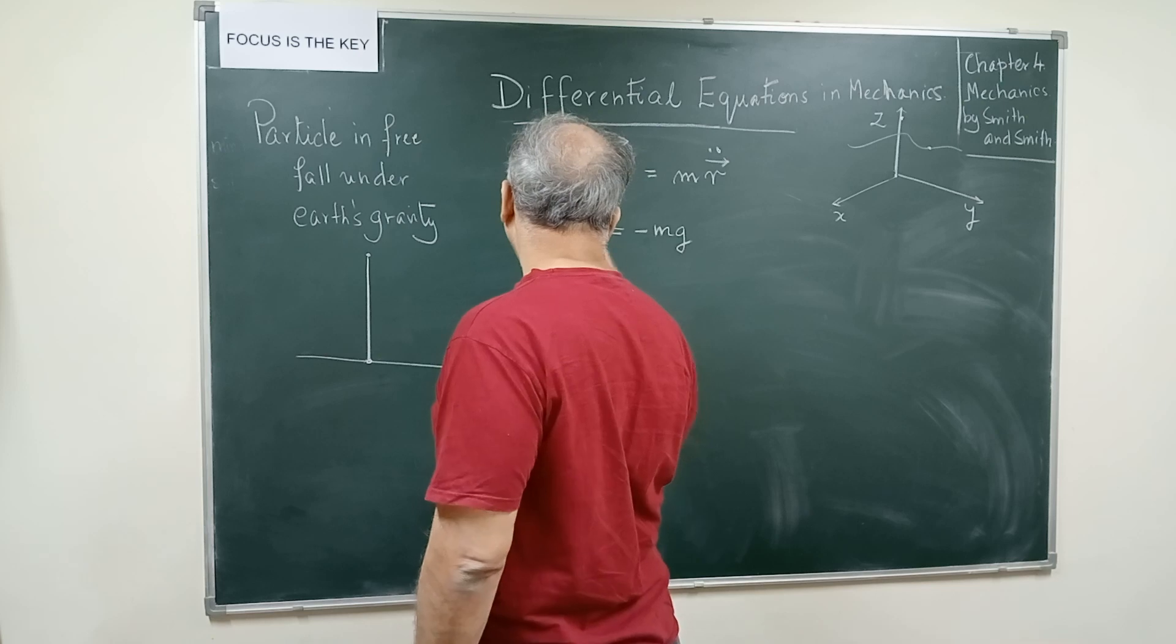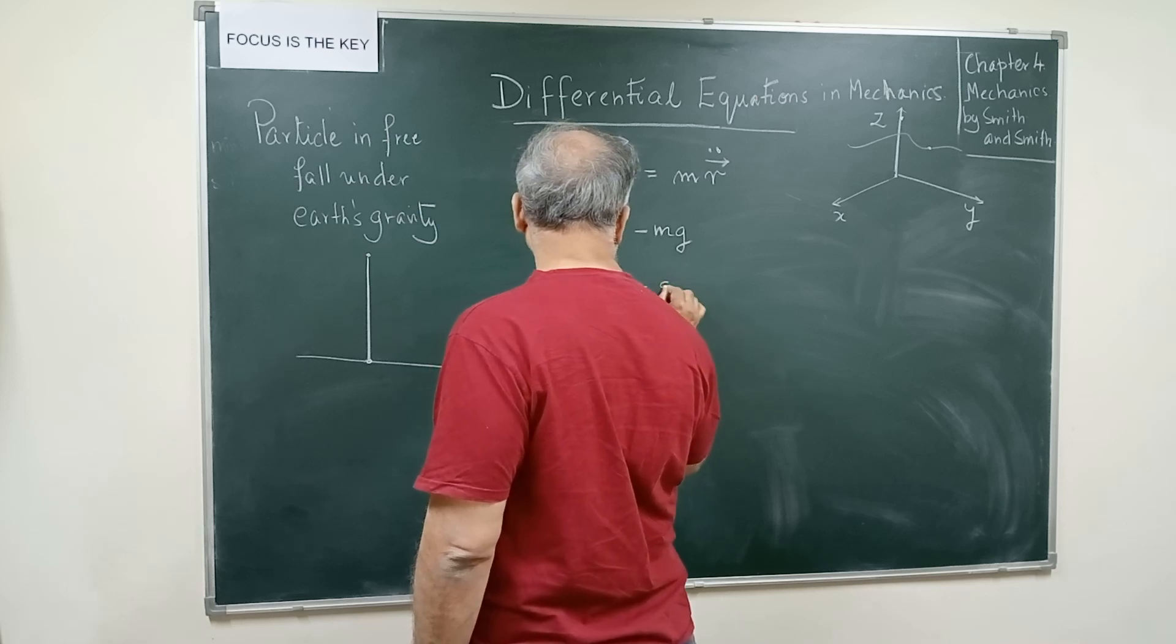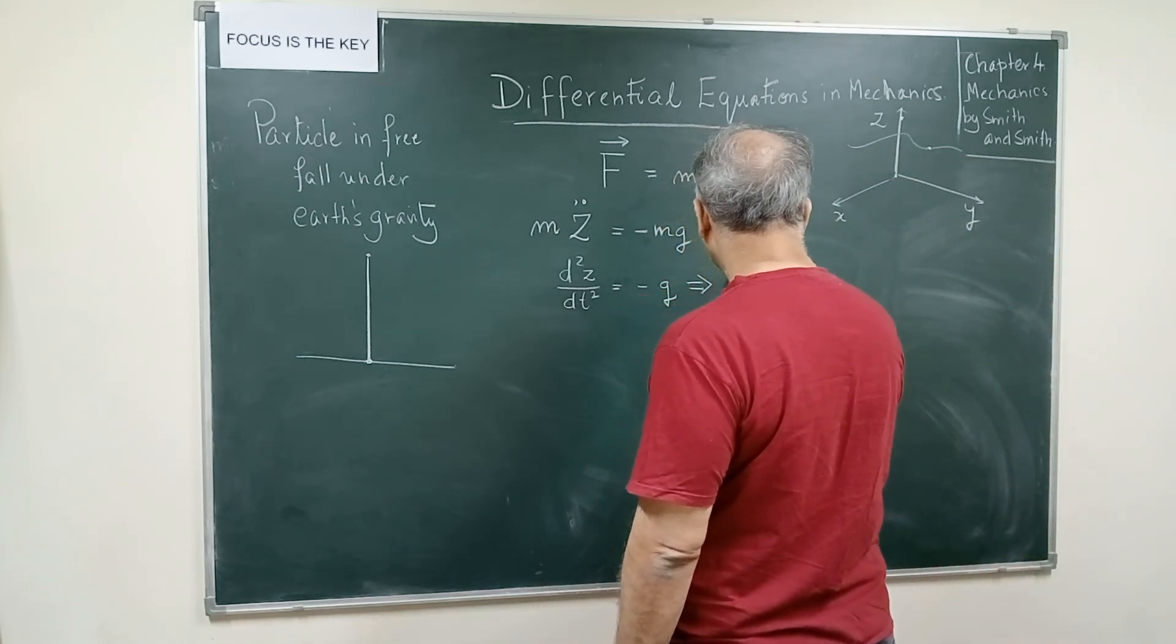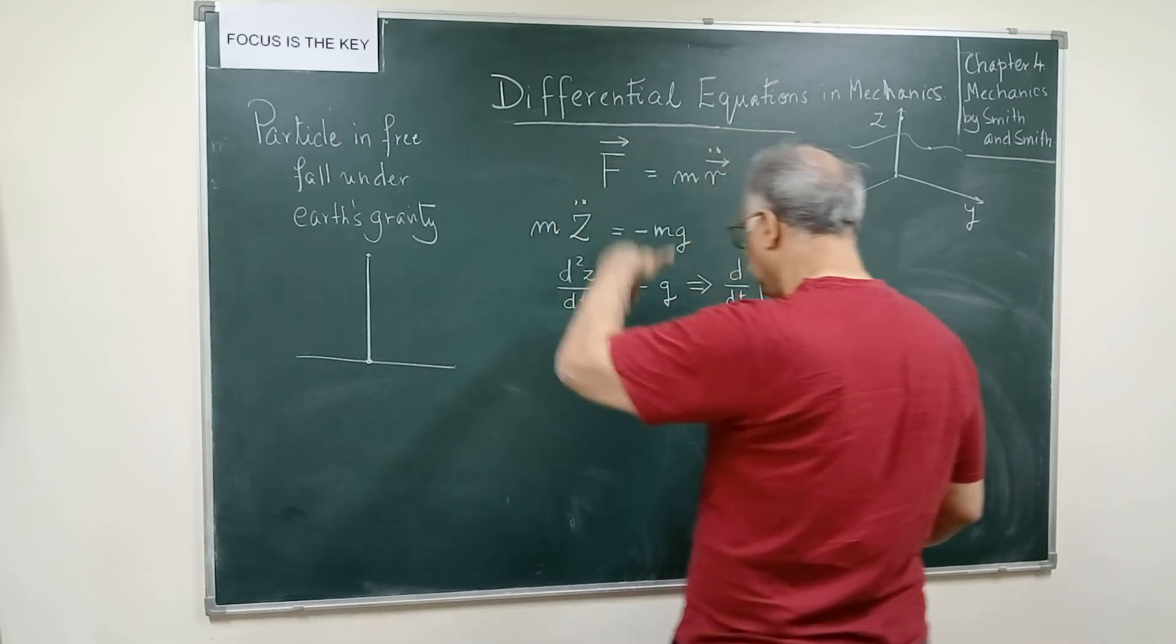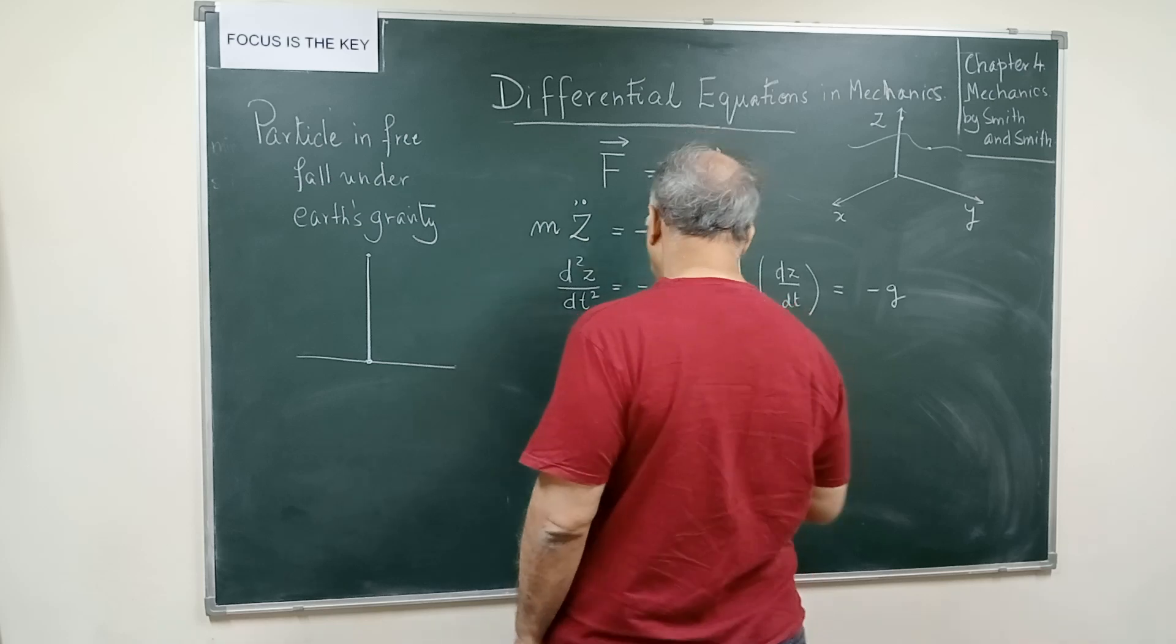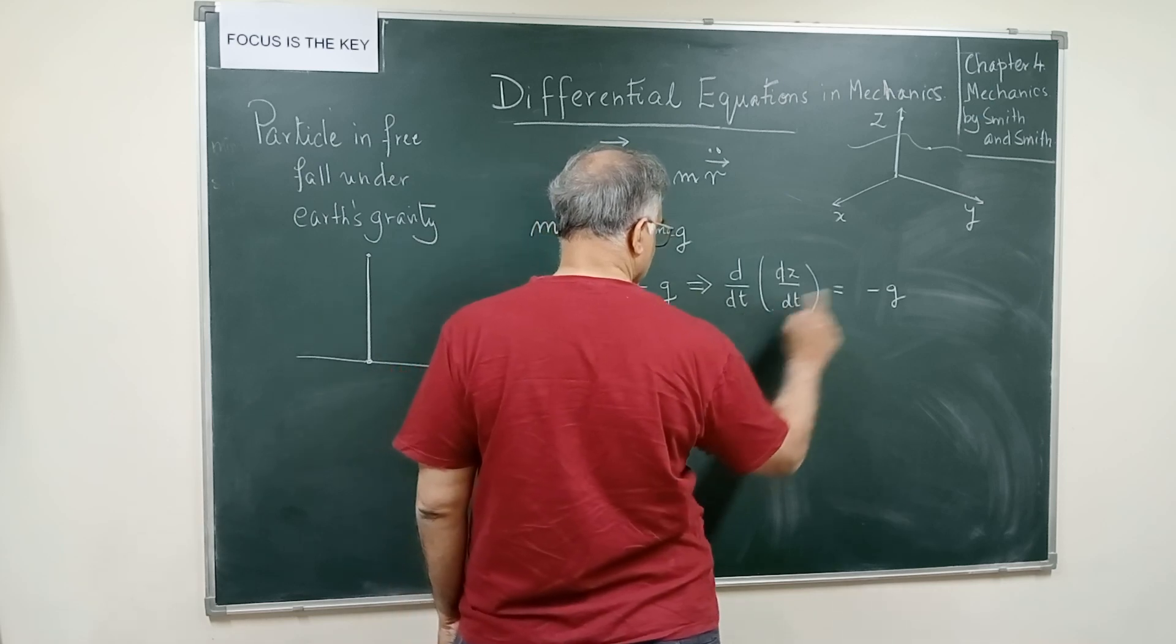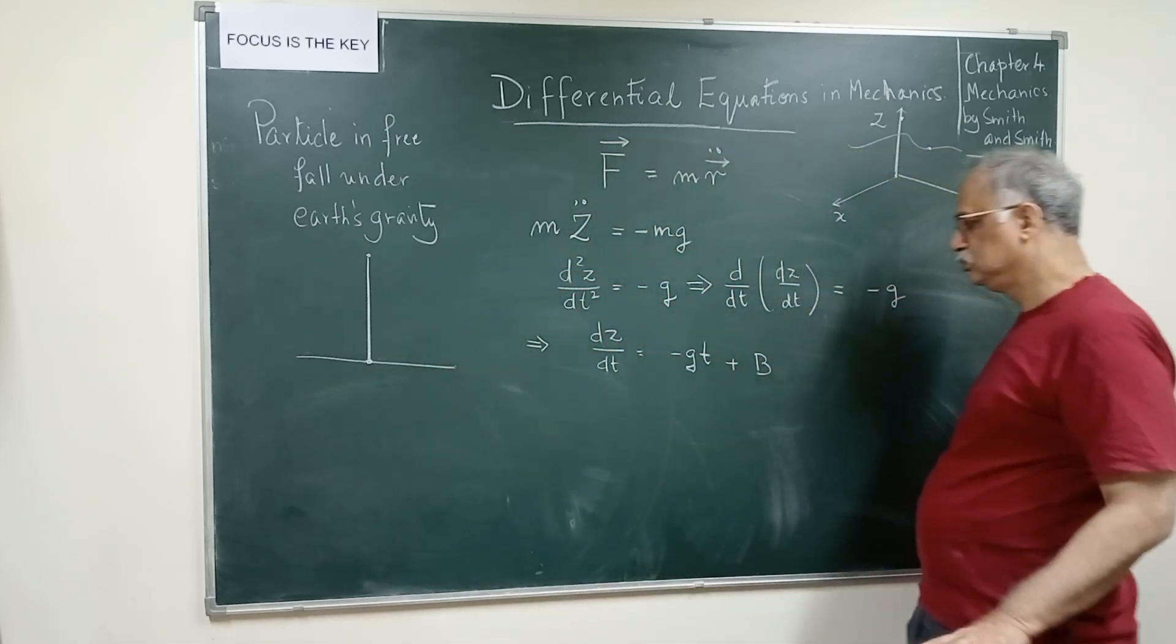So this is d²z/dt² is equal to minus g. So when you have a second order differential equation of this very simple form, g is a constant, there will be two constants of integration because you will integrate twice. What you will have here is d/dt of dz/dt which is nothing but the velocity of the object along the z axis, and that is minus g. So what you will have is dz/dt is equal to minus gt when you integrate dt here plus some constant b.